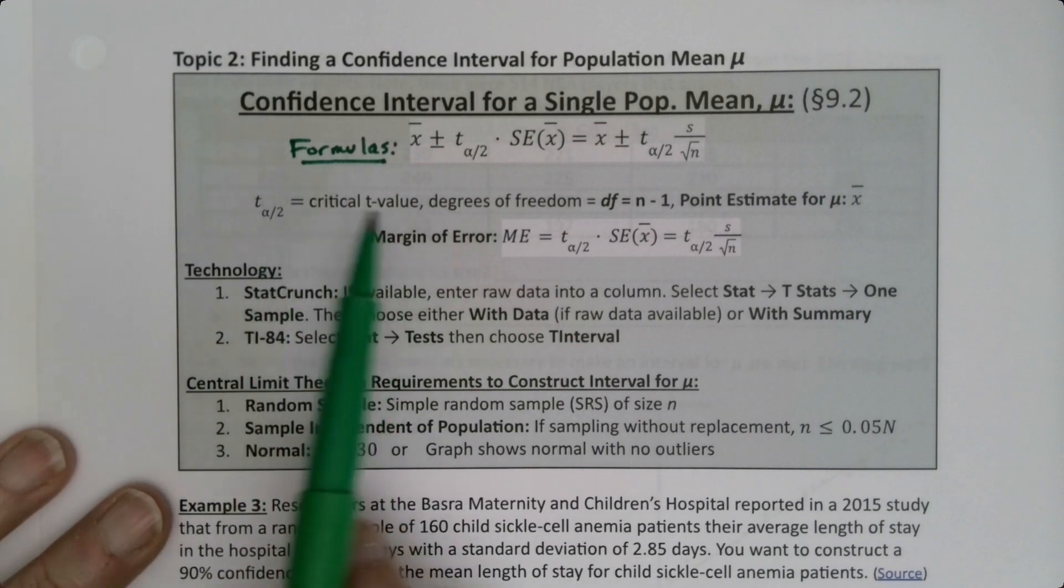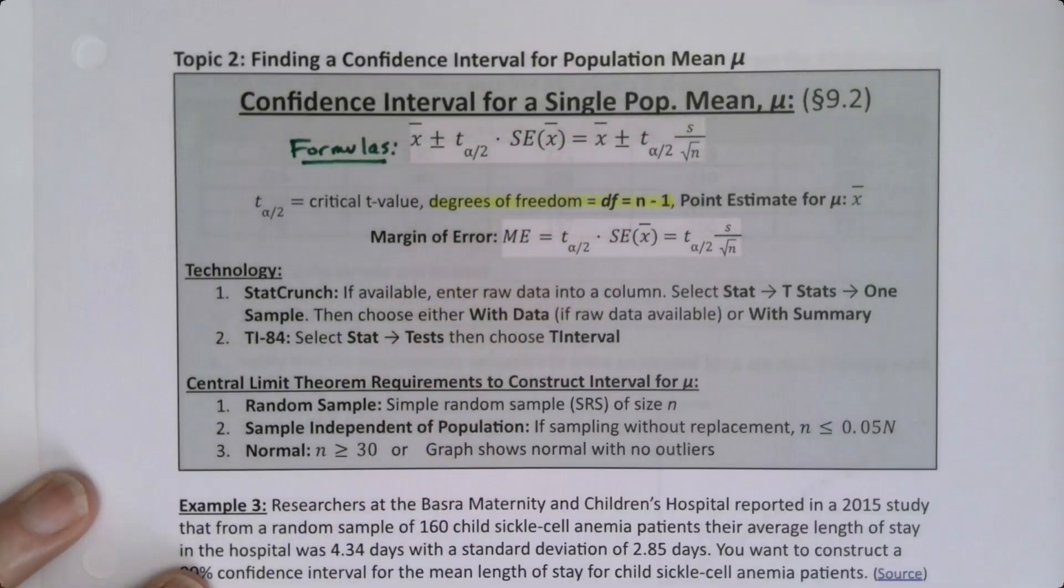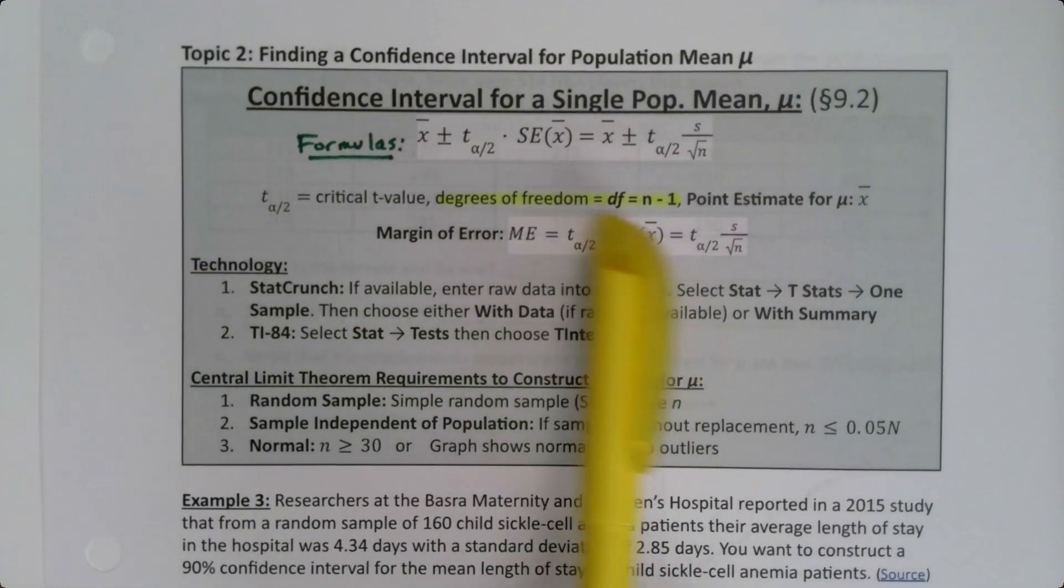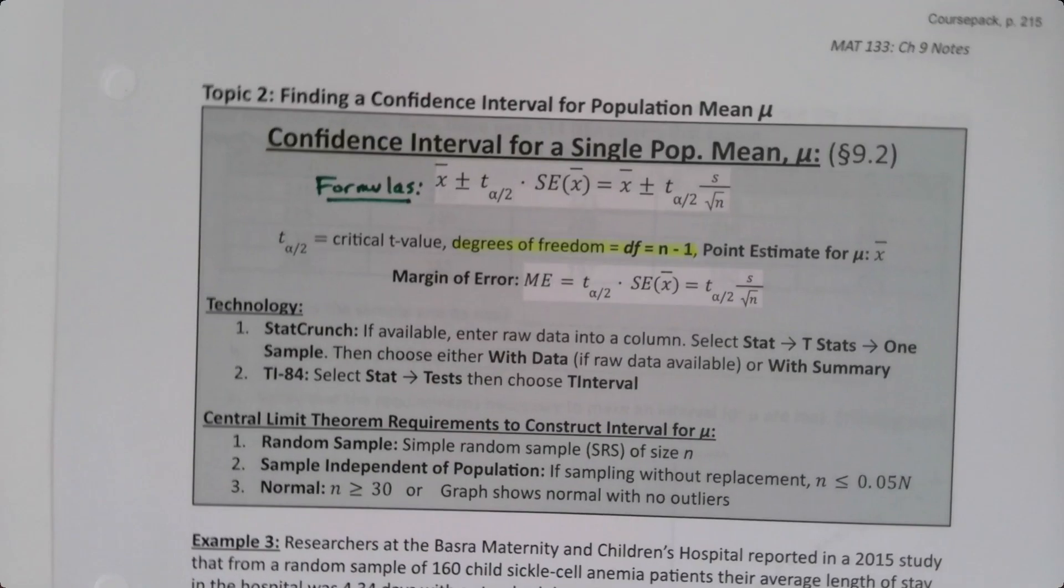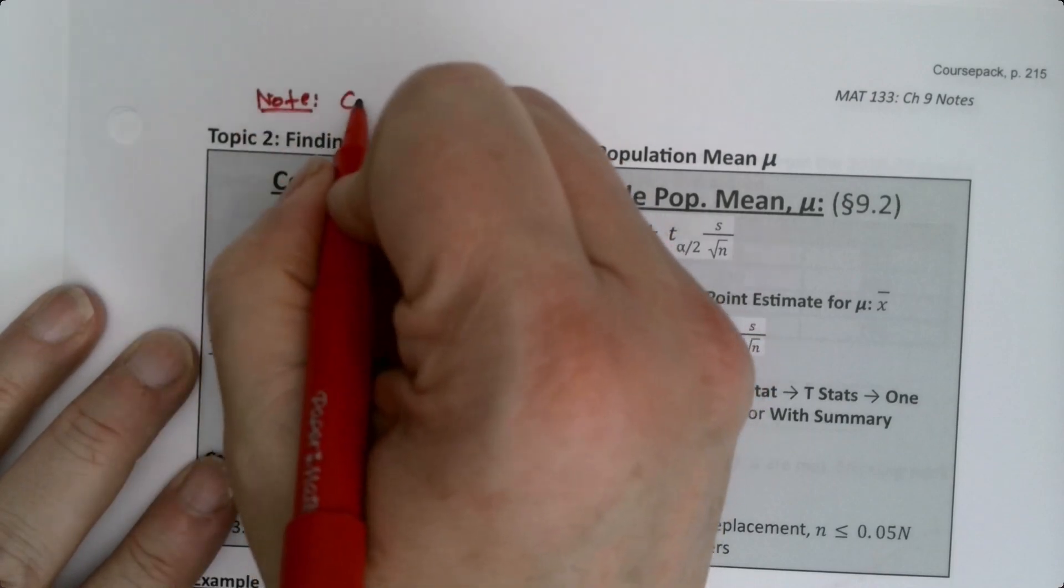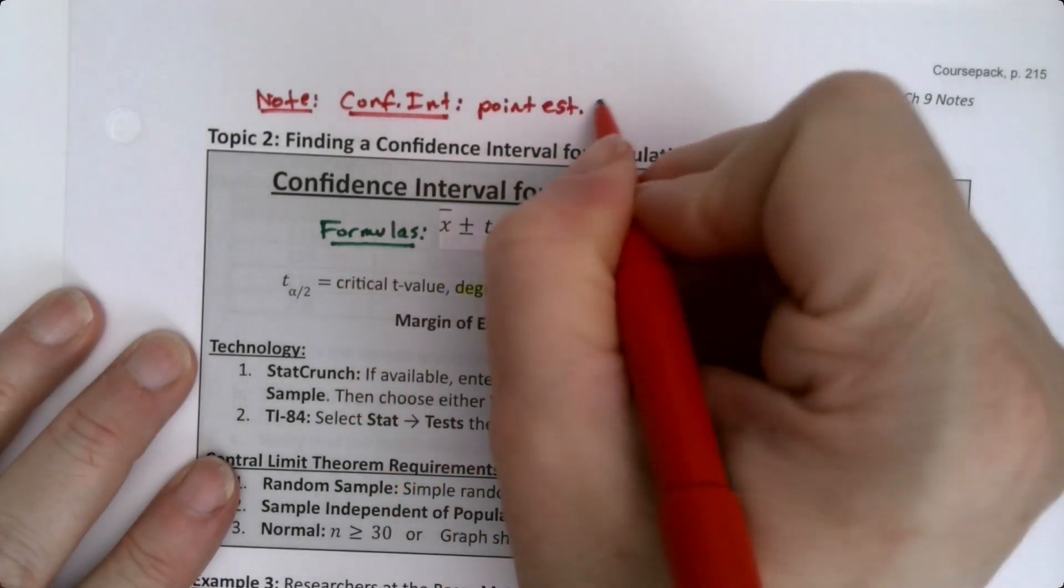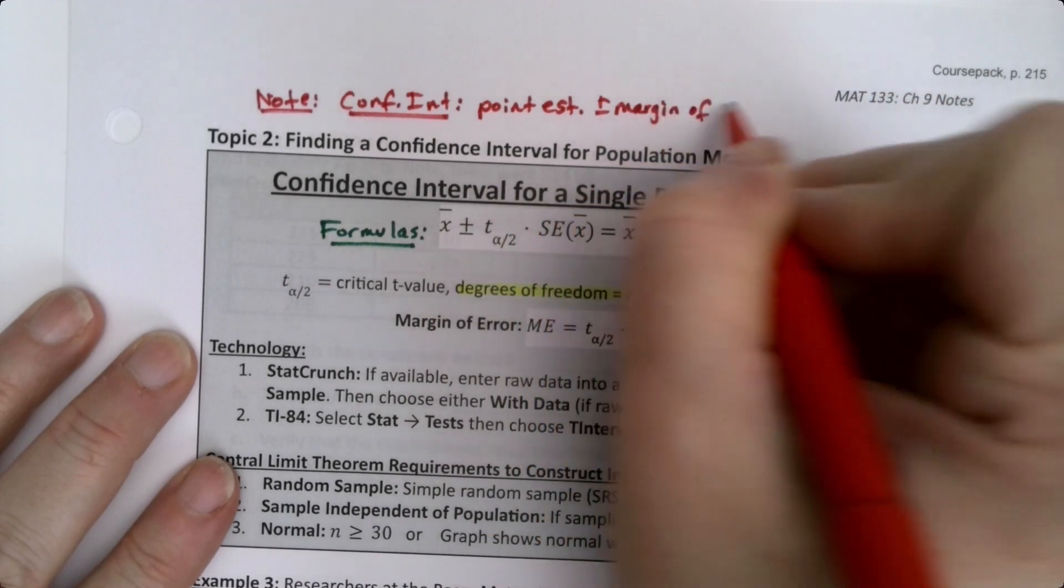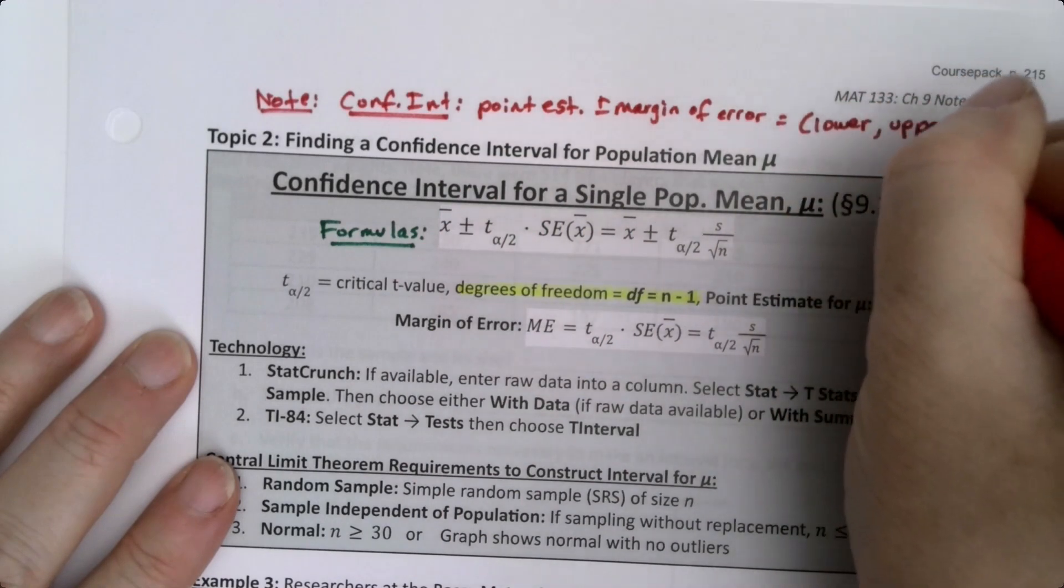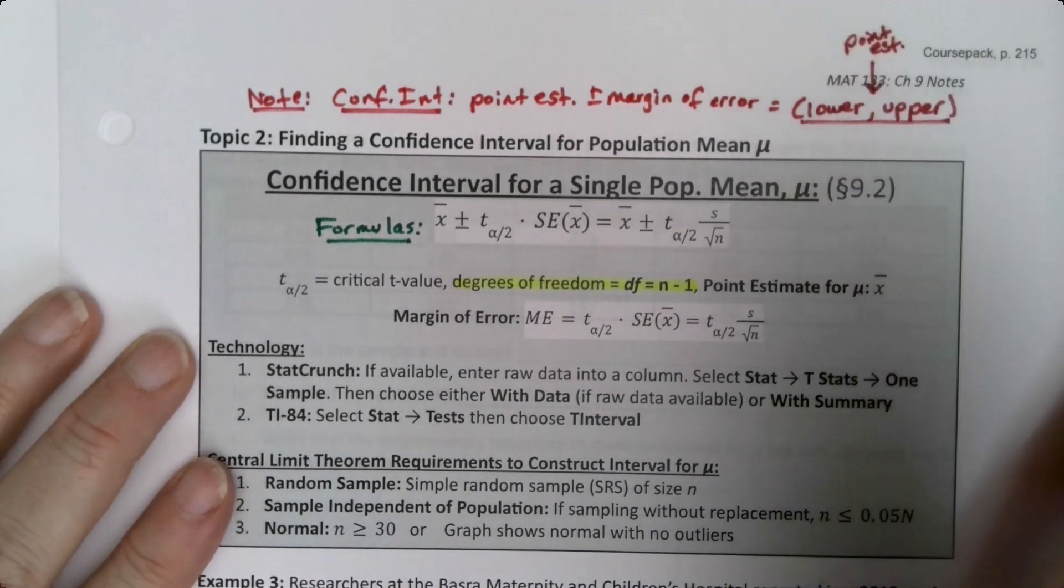So our critical t value of course is t alpha over 2. The degrees of freedom is n minus 1, never forget. n minus 1 is your degrees of freedom. And our point estimate is x-bar. The margin of error is the back half of that. So it's point estimate plus or minus margin of error. As a matter of fact, I'll just remind you, the basic formula for a confidence interval we learned about in section 9.1 is point estimate plus or minus margin of error. That's how we get the lower and the upper. That is the confidence interval, and the point estimate is in the middle of it.